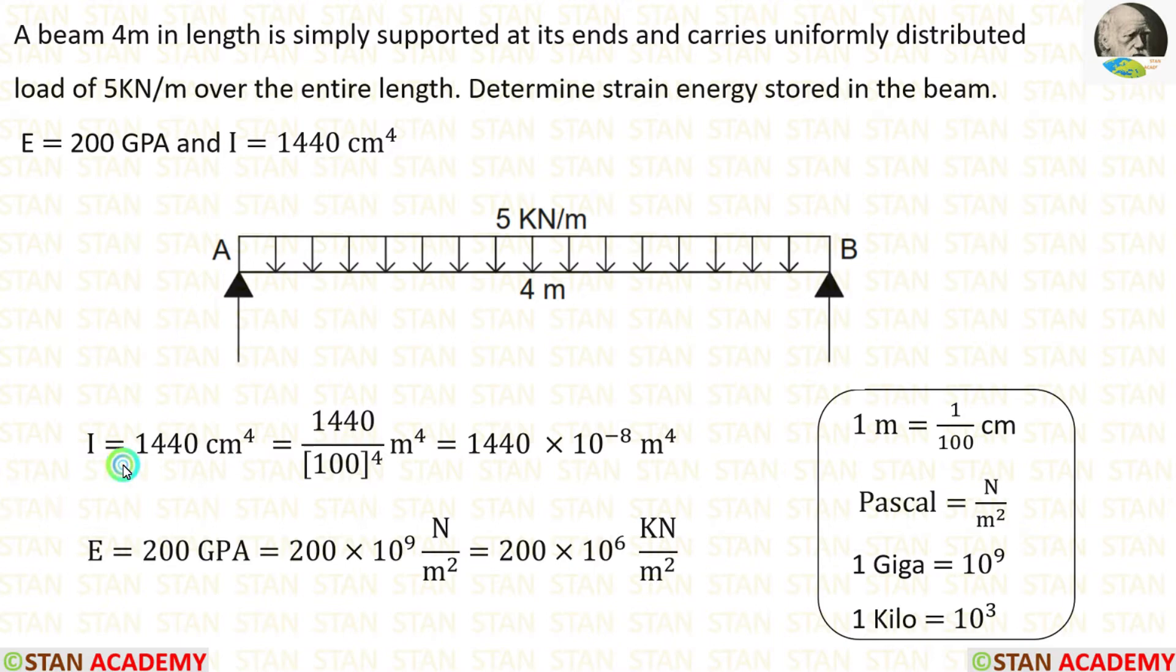The moment of inertia is given. It is 1440 centimeter power 4. But we have to convert into meter power 4. We know that 1 meter is equal to 1 by 100 centimeter. So we have to divide 1440 by 100 power 4. When we do that, we are getting 1440 into 10 power minus 8 meter power 4.